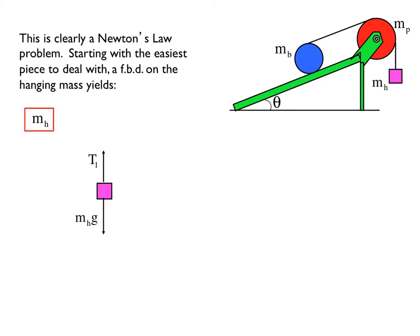We need to write down relationships that are true. The easiest way to start is to simply use Newton's Law on the hanging mass. Start with a free body diagram — we're going to have tension up and gravity down. Summing up the forces: T positive, Mg negative, equals Ma. Solving for T1, we come up with this relationship. Two unknowns: we don't know T, we don't know A. We're going to need another relationship.